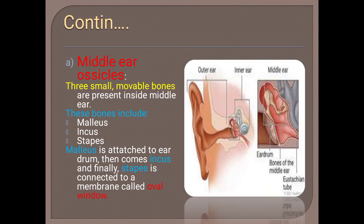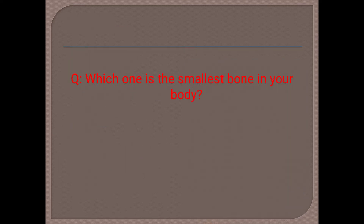The middle ear ossicles are three small movable bones present inside the middle ear. These bones are named: malleus, incus, and stapes. The malleus is attached to the eardrum or tympanum. After the malleus comes the incus, and finally the stapes is connected to a membrane called the oval window. Can you tell me which is the smallest bone in your body? Drop your answer in the comment section below.